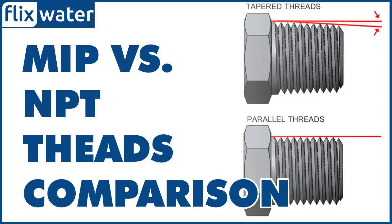MIP and NPT fittings are typically threaded and make a great seal between pipes. Even though MIP is a type of NPT, they're not completely the same. This video will demonstrate all the differences between MIP and NPT threads to help you make the best choice when it comes to pipework and plumbing.